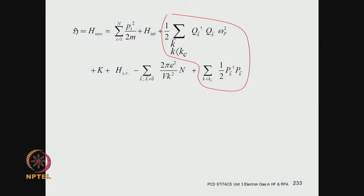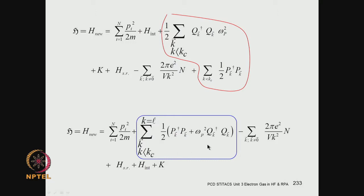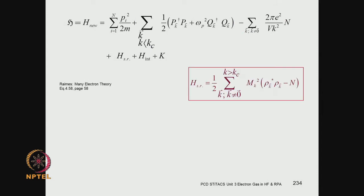Now it looks more familiar and much more like the harmonic oscillator term. If you combine these two terms, you have k less than kc. These two terms together have a half common to both. There is a p†p here and an ω²q†q here. These operators p and q are not Hermitian, but that does not matter — they do represent a harmonic oscillator. This is the harmonic oscillator Hamiltonian. Then you have the interaction Hamiltonian, the short range term, K, and also the minus 2πe²/Vk²n term. The whole expression is exact.